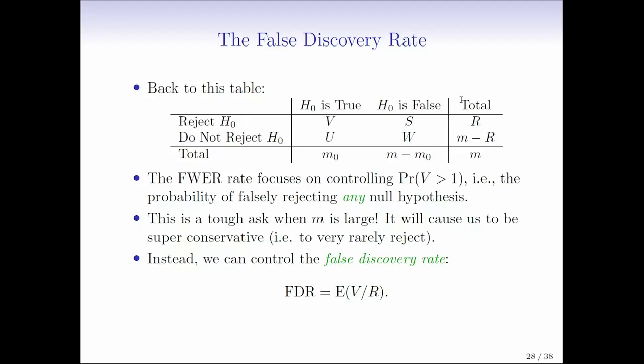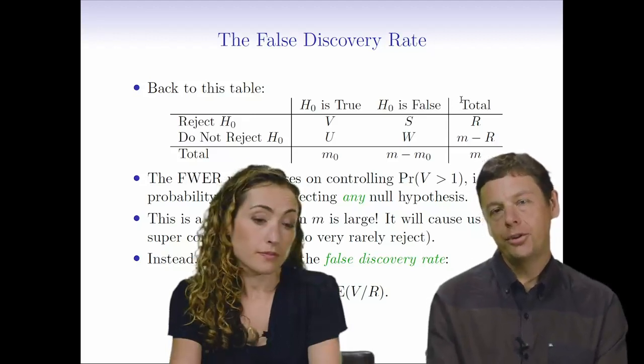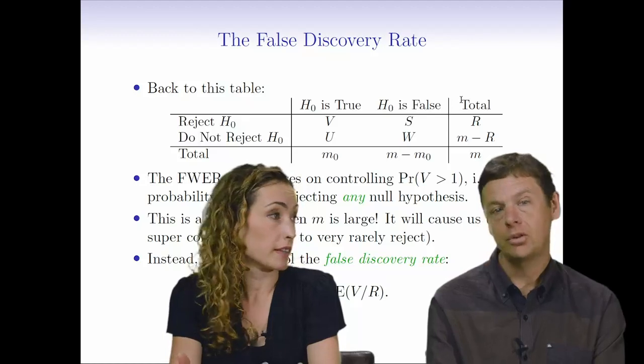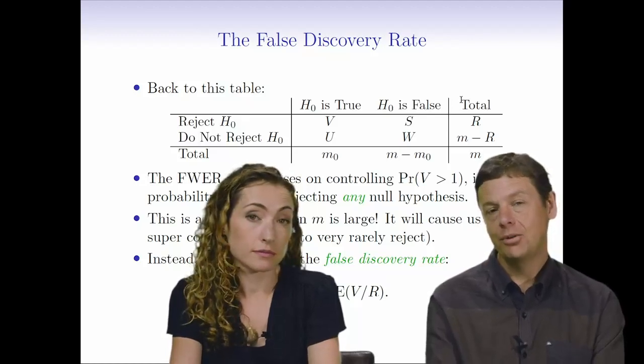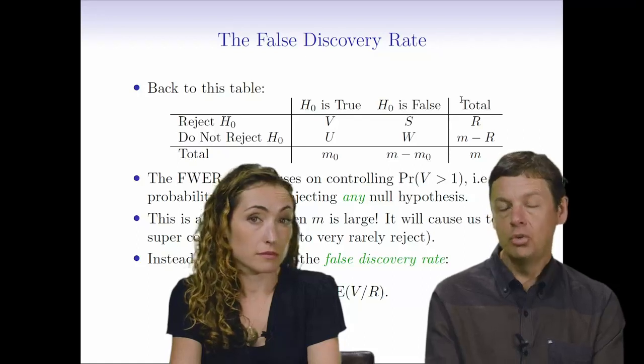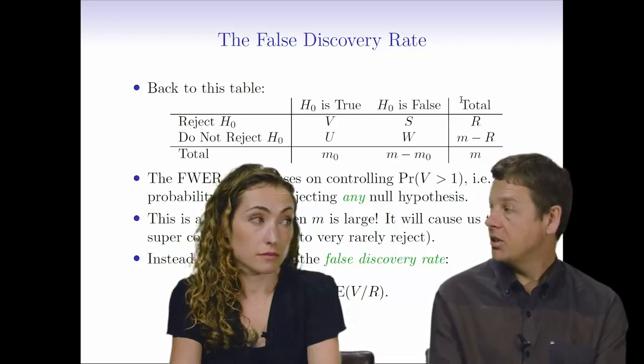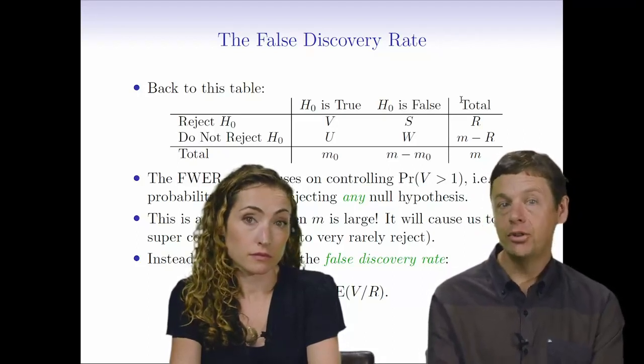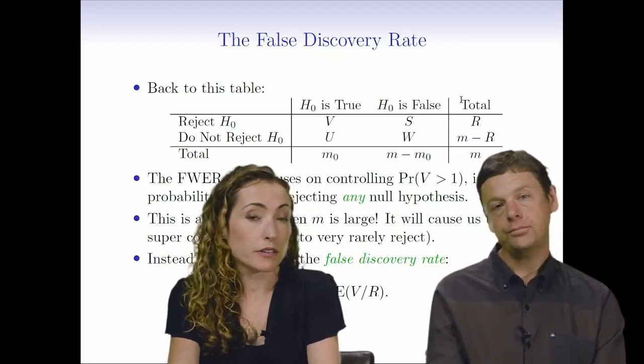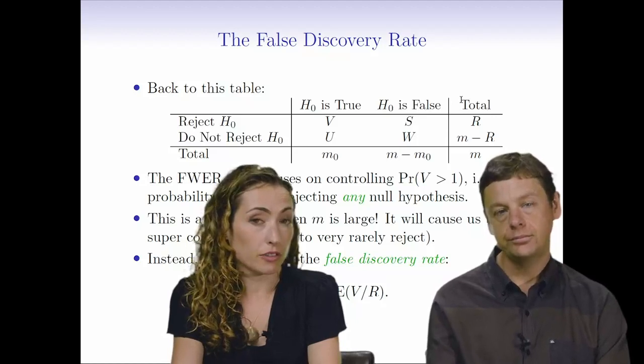The FDR is just the fraction of the rejected null hypotheses that were actually true, that we actually shouldn't have rejected. And that E notation means that this is an expectation. On average, we might have a false discovery rate of, say, 20%. That would indicate that of all the null hypotheses we rejected, we expect about 20% of those to be false discoveries and 80% of them to be correct discoveries.